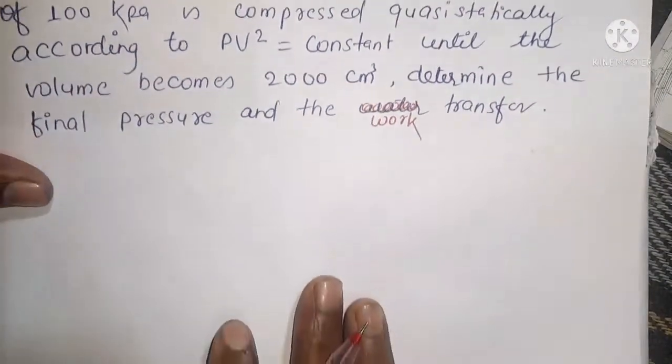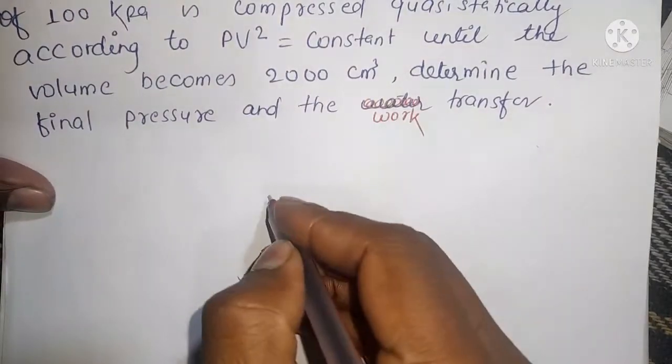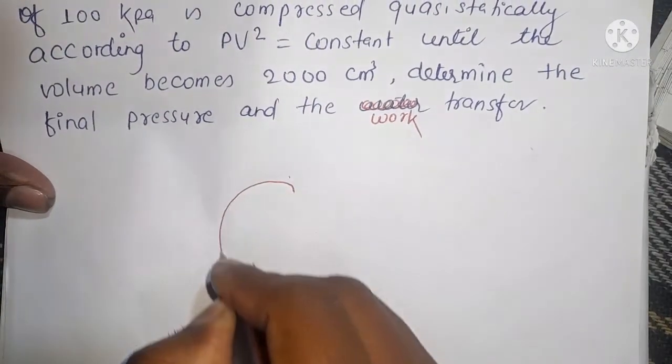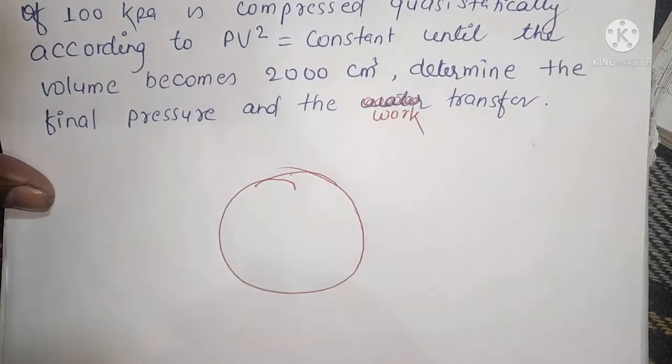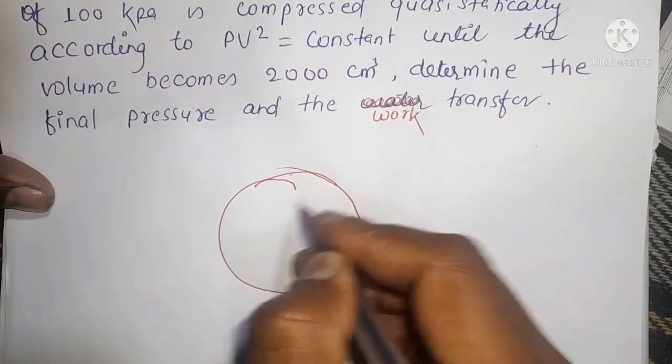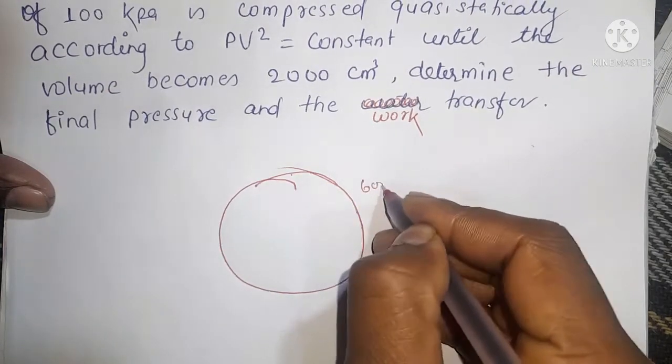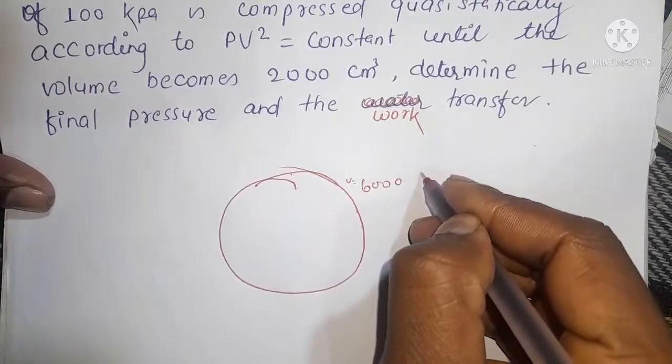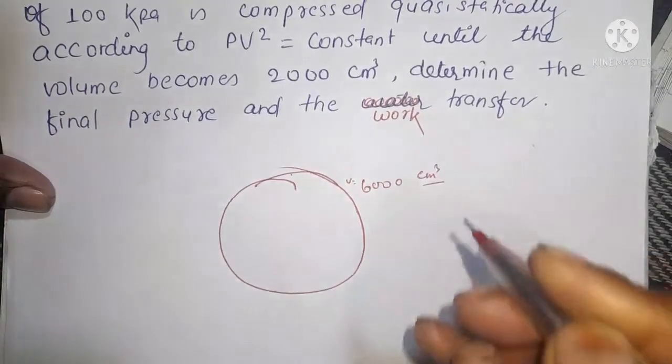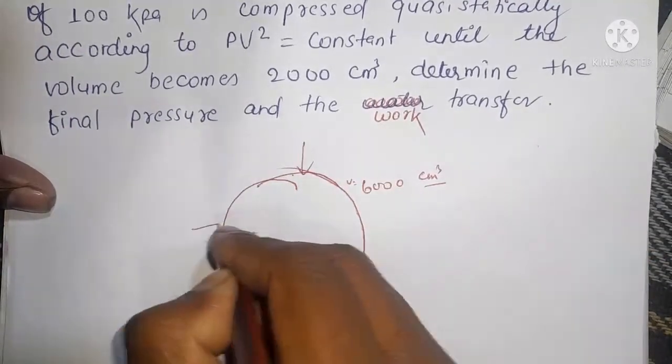This is a gas system. Here, the initial volume is 6,000 cubic centimeters, and this gas is compressed.